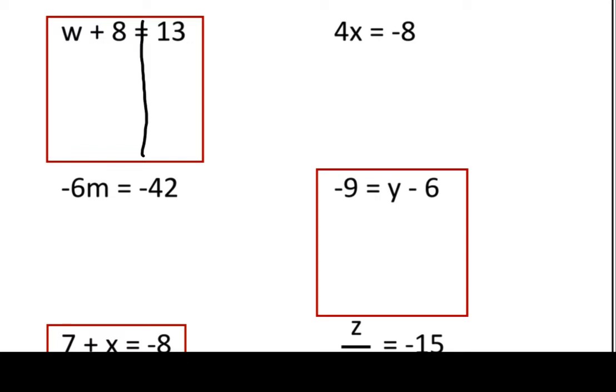Then, in order to solve it, remember, our goal is to get the variable by itself. We want to know what just w is. Well, to do that, we need to get rid of whatever happened to the w. In this case, they've added 8. So to solve an equation, we want to do the opposite of whatever they did. So if they added 8, I want to subtract 8. Adding and subtracting are opposite or inverse operations. They undo each other.